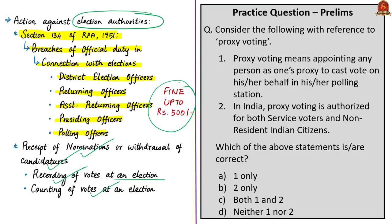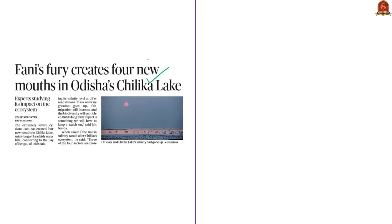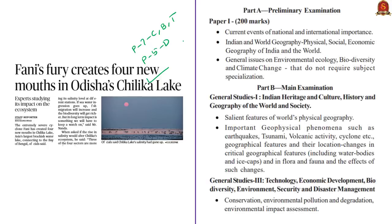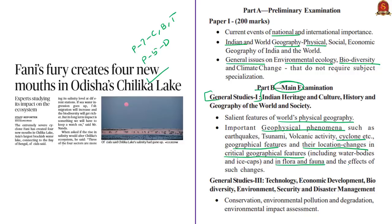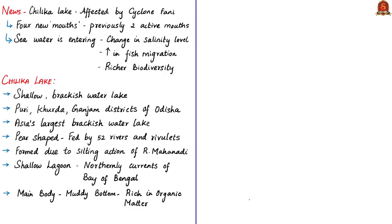The next article is about Chilika Lake, appearing on page 7 of Chennai, Bengaluru and Thiruvananthapuram editions and page 5 of the Delhi edition. This article will be relevant in prelims preparation under current events of national importance and Indian physical geography, general issues on environmental ecology and biodiversity, and in mains under GS1 in salient features of world physical geography, important geophysical phenomena such as cyclones, geographical features, changes in critical geographical features, and flora and fauna, and under GS paper 3 in area conservation.